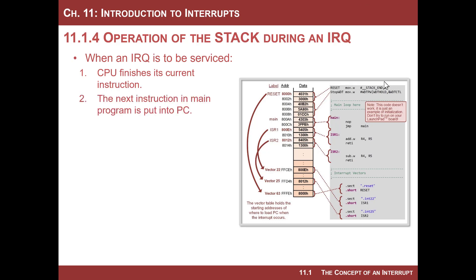The next instruction in the main program is put in the program counter, and then we need to preserve that somewhere, so we push it to the stack. Think about what's going to happen: the CPU is going to load up a new address in the program counter to go execute an interrupt service routine, and you're going to need full resources of the CPU. That interrupt service routine needs its own status register flags to set, clear, branch, and jump accordingly. But you're also going to return to the main program that may have altered some of those status register flags and you don't want to mess with those. So you also need to push the status register to the stack.